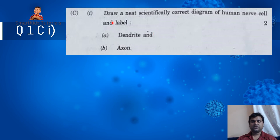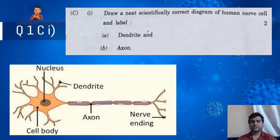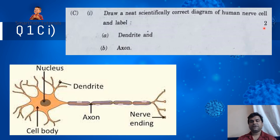Next, Question 1C1: you are asked to draw a scientifically correct diagram of a human nerve cell and label the dendrite as well as the axon. The dendrite is at the head part near the cell body where the nucleus is, and the axon is the long tail part. Do not confuse the dendrite with the nerve endings — nerve endings are in the tail part. A neat diagram with dendrite and axon labelled will fetch you two marks.